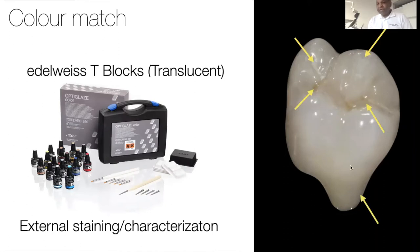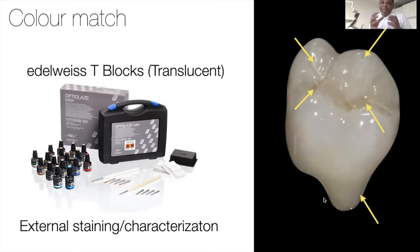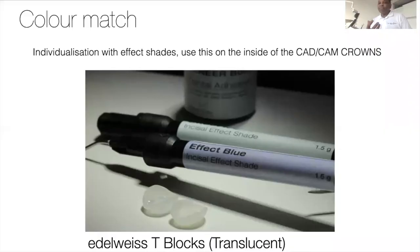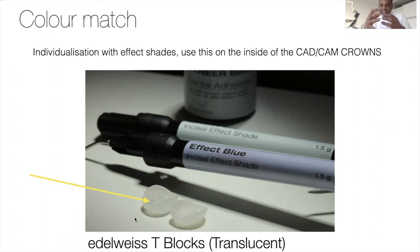So for the first time, this can be done in the mouth itself — the dentist has the option of manipulating the shade based on actual clinical conditions. Internal characterization can also be done with Edelweiss effect shades, where the final outcome is manipulated from within the restoration itself. For example, if you want a halo effect on the inside, you use a little bit of the effect glue, which gives you that halo effect from within the restoration itself.